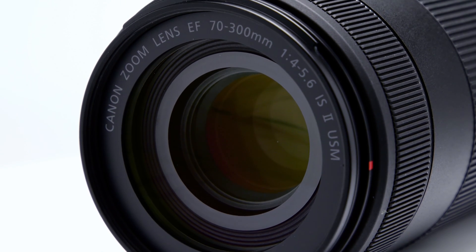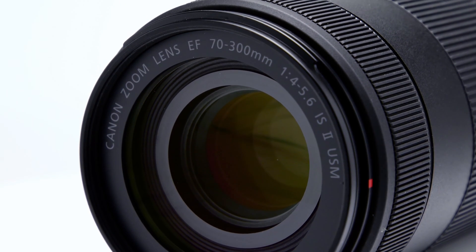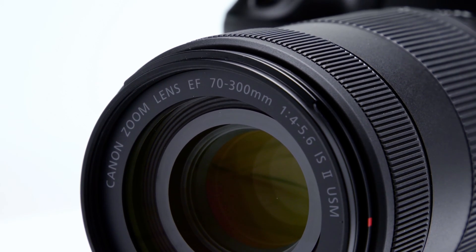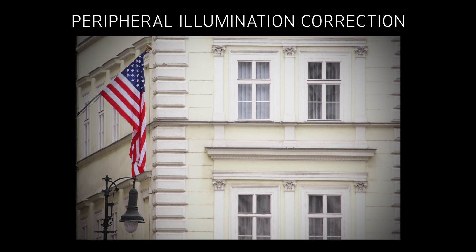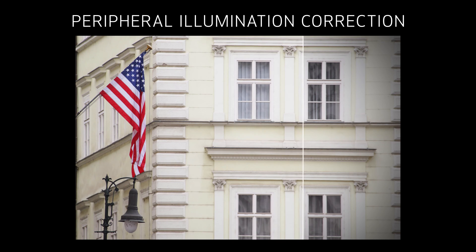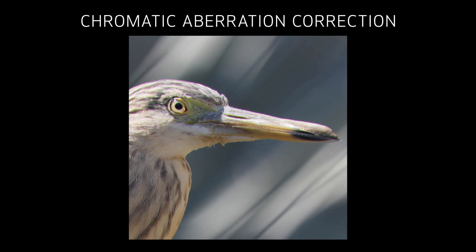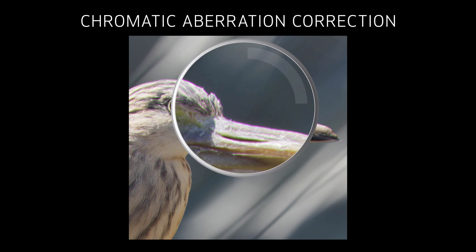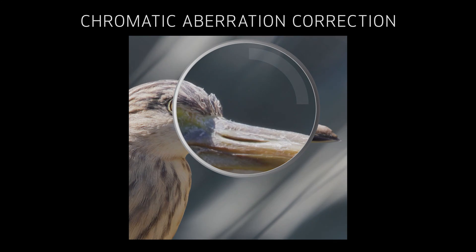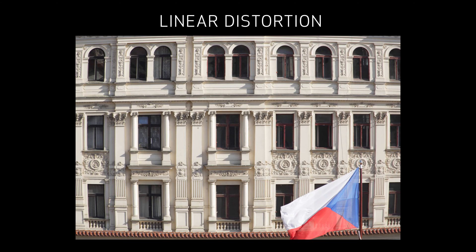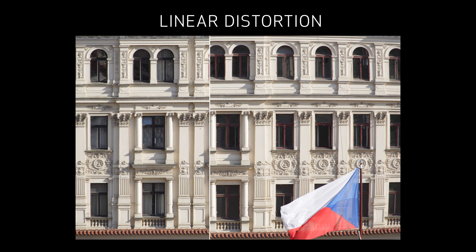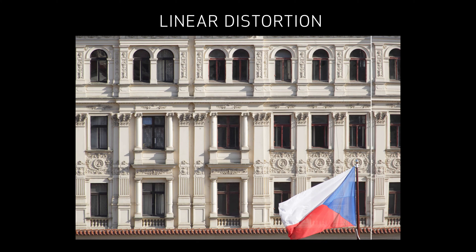we've had three types of in-camera lens aberration corrections: peripheral illumination correction, which reduces the darkening you sometimes see towards the outer areas of a scene; chromatic aberration correction, which reduces the bands of false color that can appear around bright outlines; and correction for linear distortion, to reduce bending of straight lines.